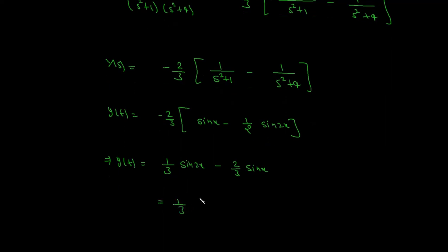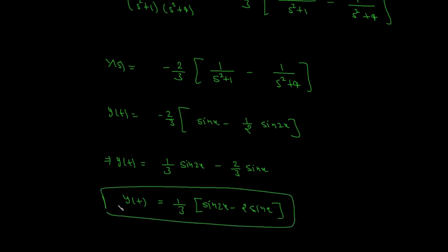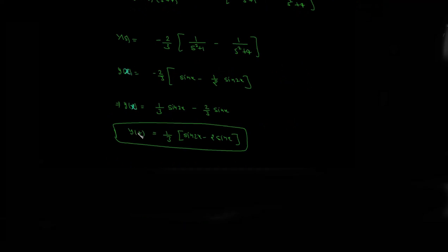The answer for the given problem is one third sin(2x) minus two thirds sin(x). Note: the solution is y(x), not y(t), because y is a function of x.